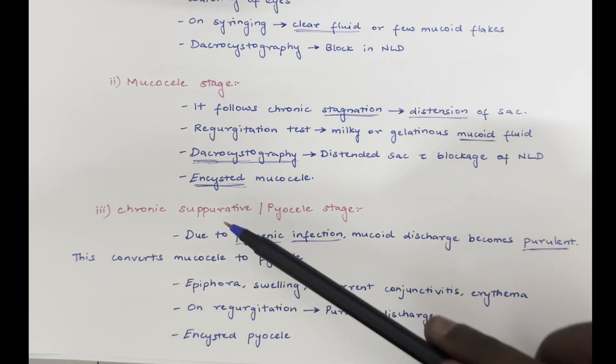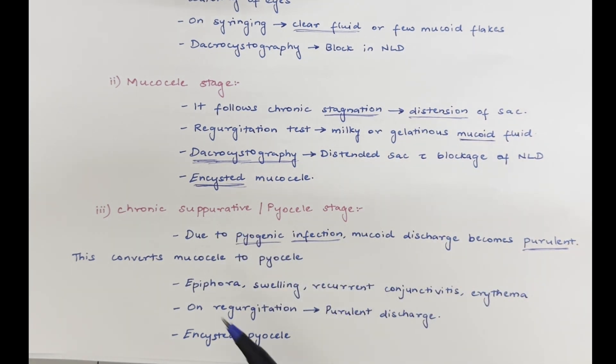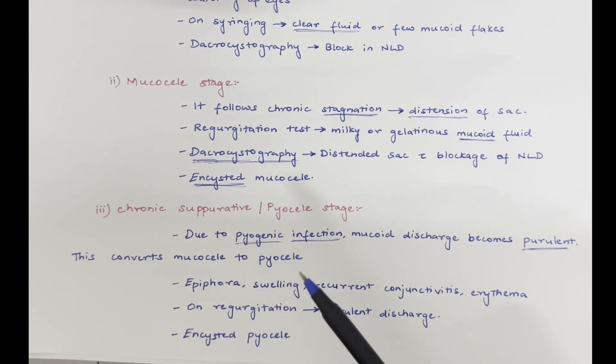Third stage is the chronic suppurative or pyocele stage. This is due to pyogenic infection. In this stage, mucoid discharge will become purulent. The mucocele is converted into pyocele. We can also see epiphora, swelling, recurrent conjunctivitis and erythema. On regurgitation test, we can see purulent discharge.